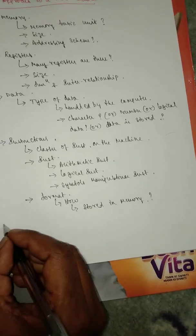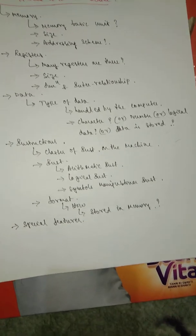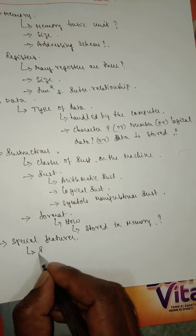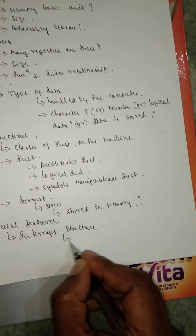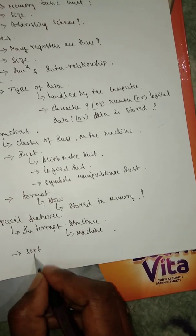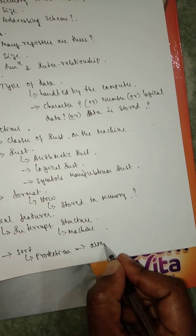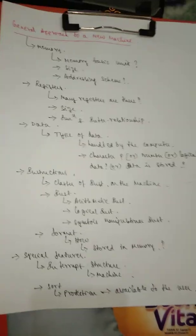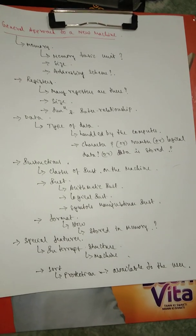The next category is special features. Under this category we will look into what kind of interrupt structure we will have in the machine we are trying to design, and what sort of protection is available to the user.